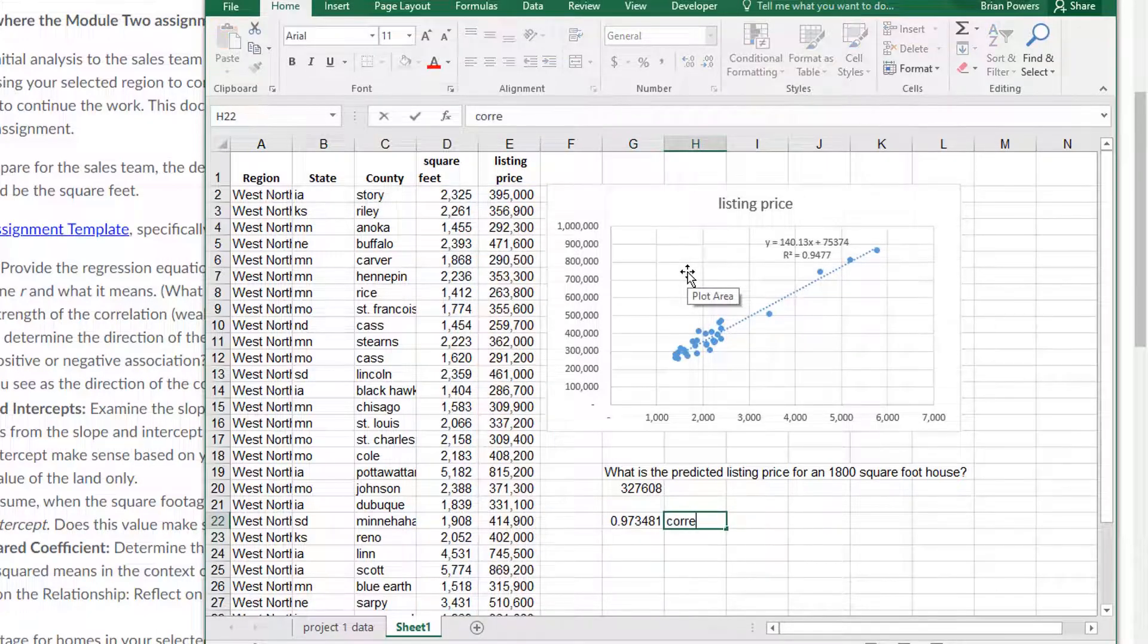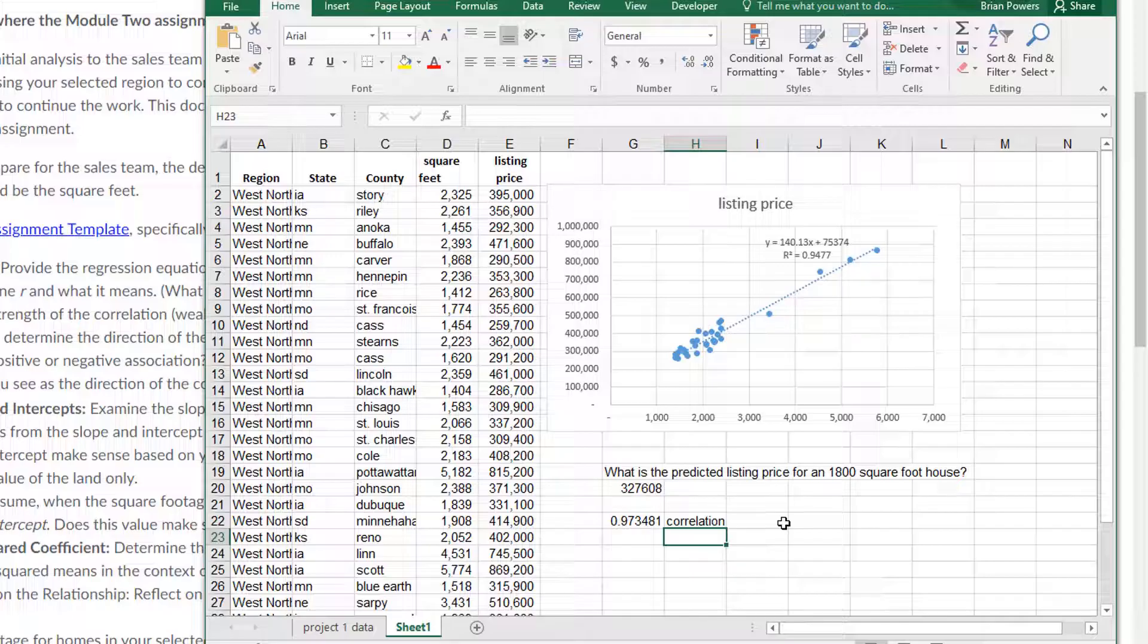The correlation is going to be a number somewhere from negative 1 to positive 1. It is the square root of my R squared. The same R squared that's on this chart. Of course, if it was slanting downwards, it would be the negative square root of it. But it's the square root. So this correlation is very, very big. It's close to 1. And so I would say it's a very strong positive association, a very strong correlation.